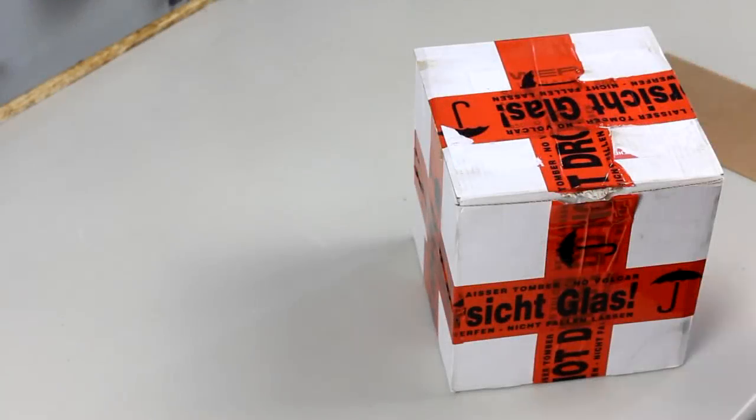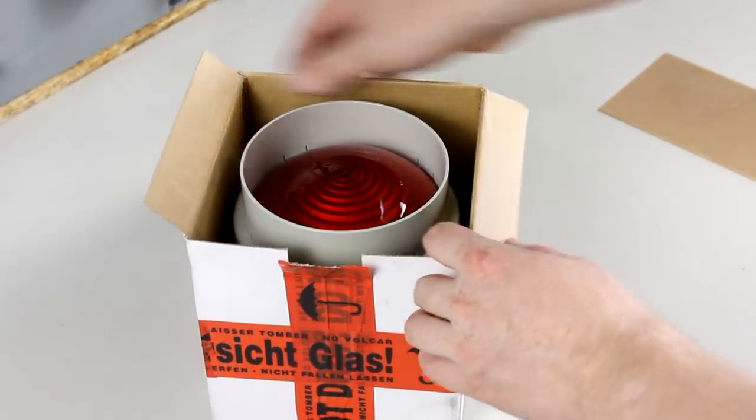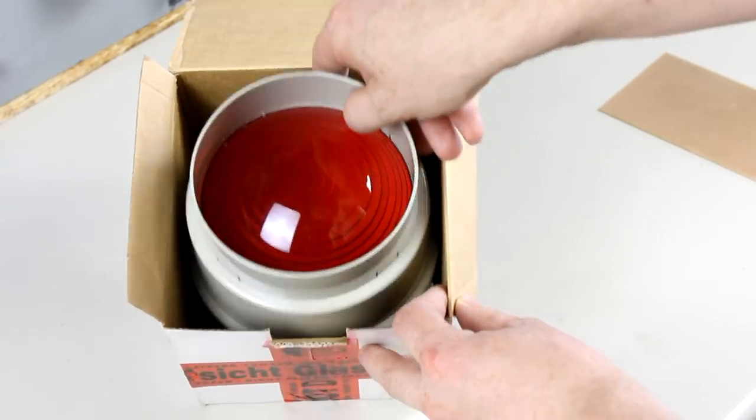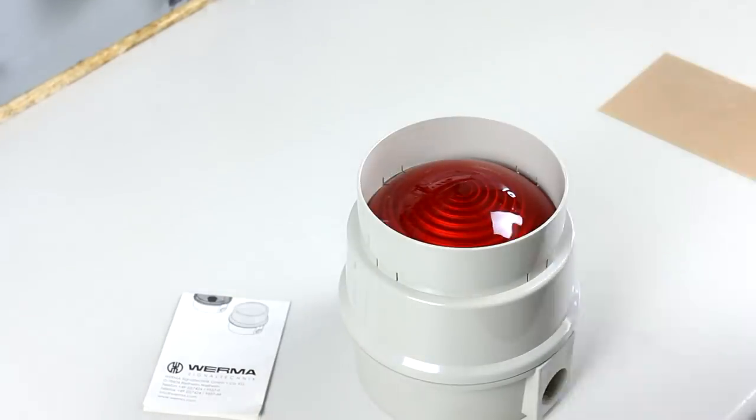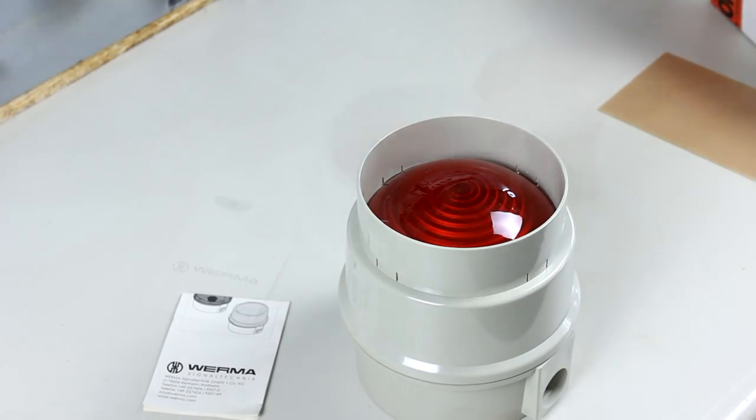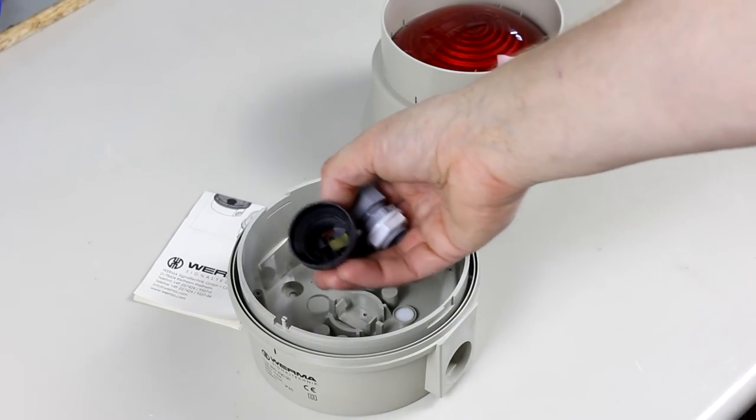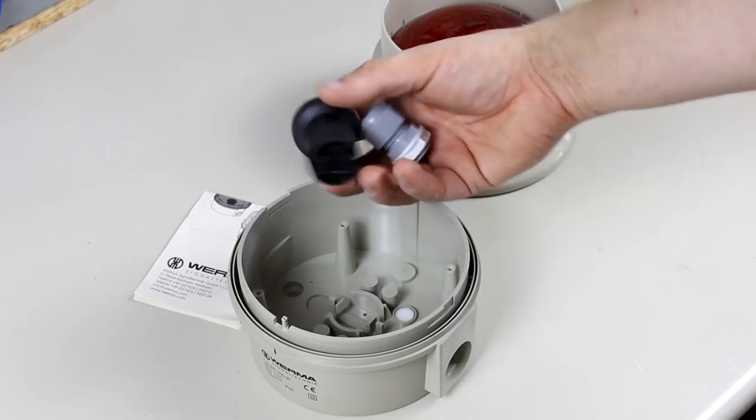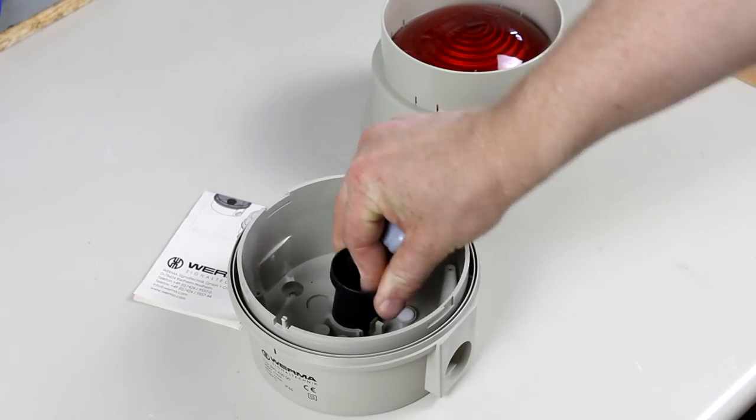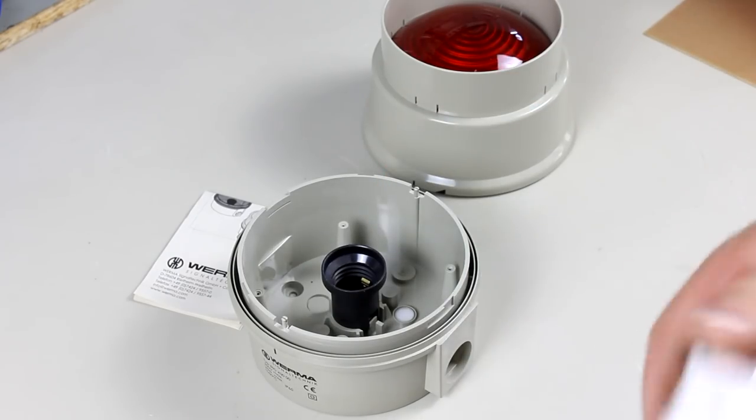So I started by looking for rare or unusual signal lights on eBay and what I first scored is this big red signal lamp made by the German company Werma Signaltechnik, which means Werma signaling technology, and I got it for only 11 euros while normally these sell for around 50 or 60 euros. It appears that normally this lamp is lit by an ordinary incandescent light bulb with an Edison socket, but that would be too boring for what I have in mind.